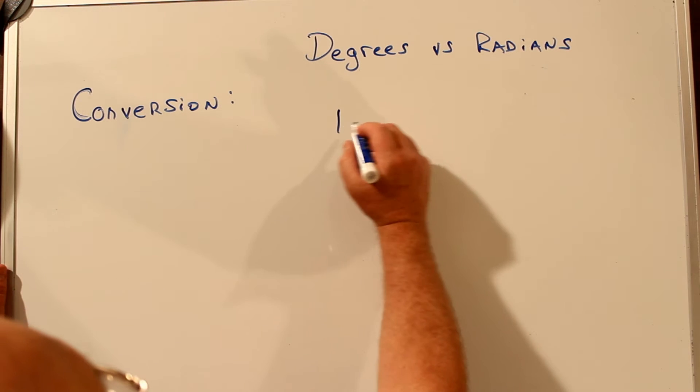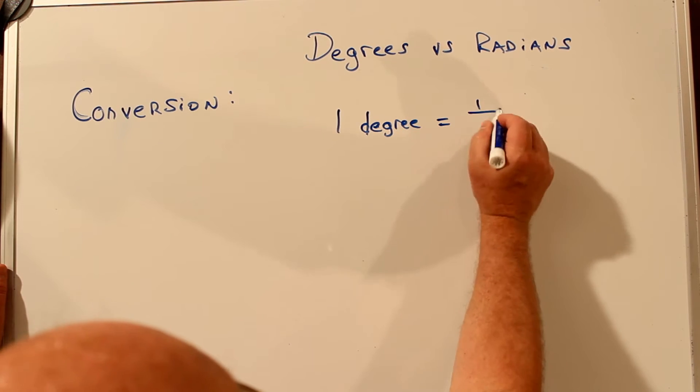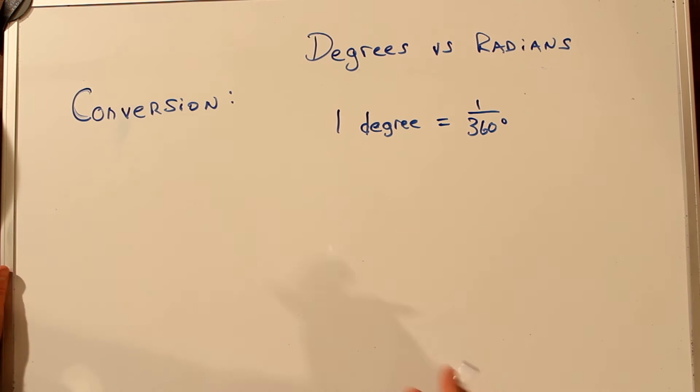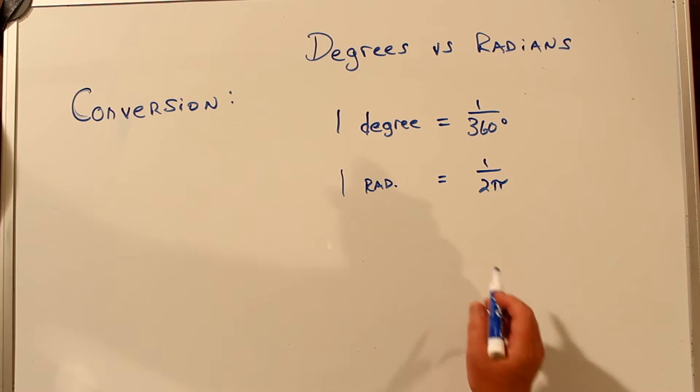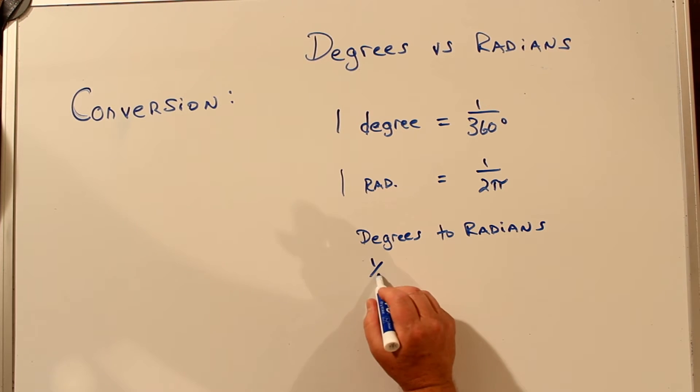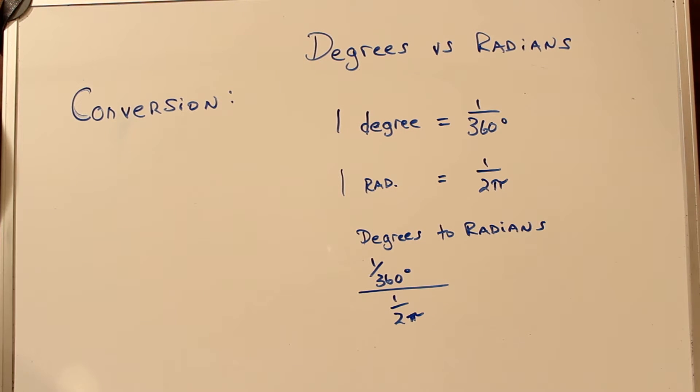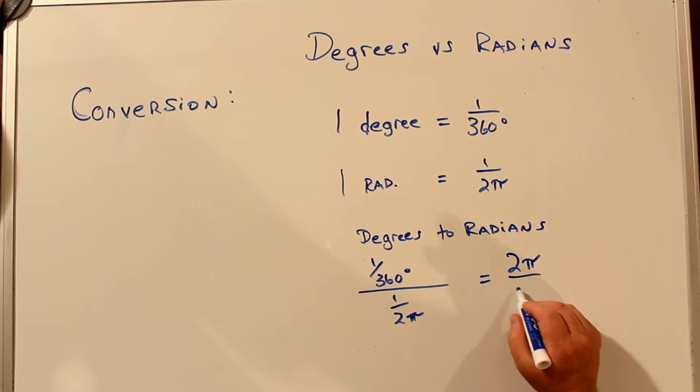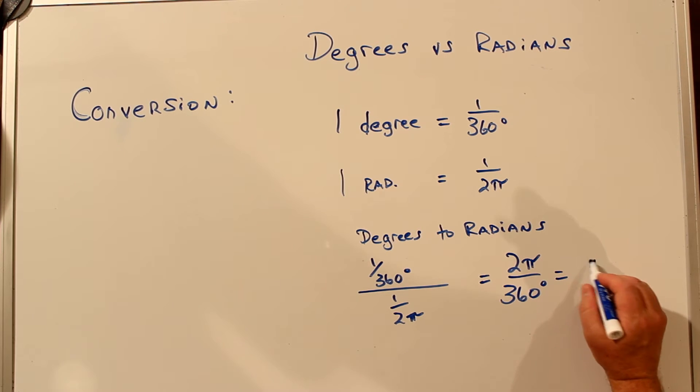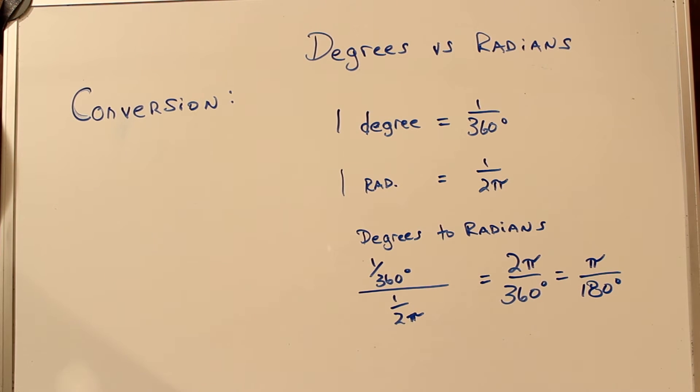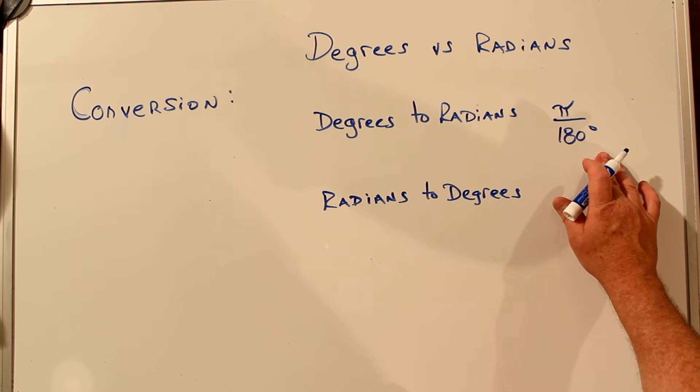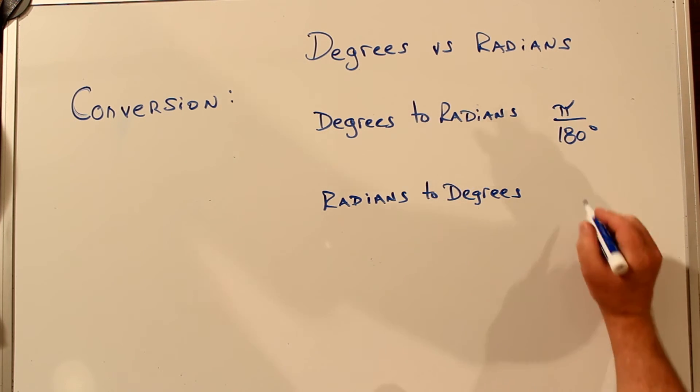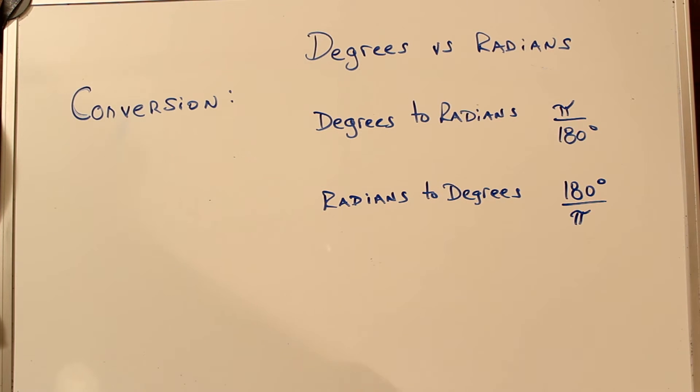For conversion, we said that 1 degree is 1/360th of the way around a circle, and that 1 radian is 1 over 2 pi of the way around the circle. From this, we can see that degrees to radians would be 1 over 360 over 1 over 2 pi, or 2 pi over 360 degrees, or pi over 180 degrees. We just take the units and divide them out. And if degrees to radians is pi over 180 degrees, radians to degrees is simply 180 degrees divided by pi.